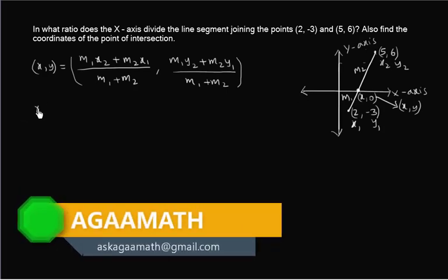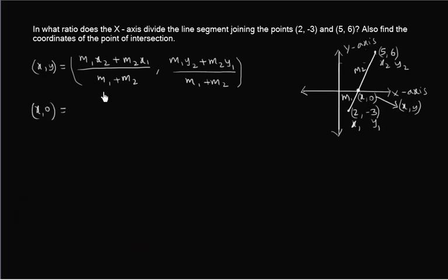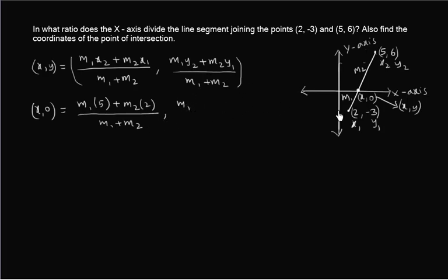So x comma 0 is equal to: m1 times x2 which is 5, plus m2 times x1 which is 2, divided by m1 plus m2; comma m1 times y2 which is 6, plus m2 times y1 which is minus 3, divided by m1 plus m2.